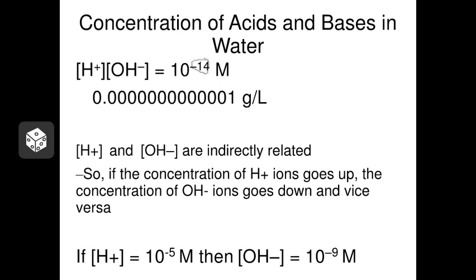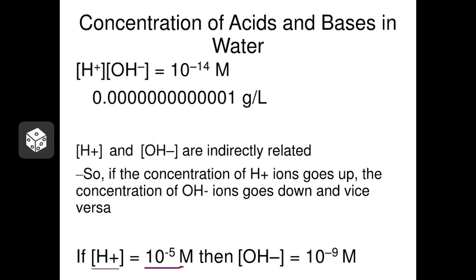The concentrations of hydrogen and hydroxide in any solution are inversely related. As the concentration of hydrogen goes up, the concentration of hydroxide tends to go down, and vice versa. We can use this to determine concentrations: if the hydrogen concentration is 10 to the negative 5 molar, then the hydroxide concentration is going to be 10 to the negative 9 molar, because 5 plus 9 equals 14 — our magic number.